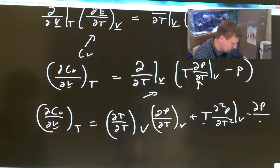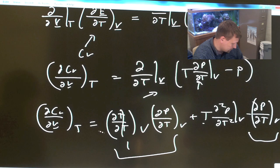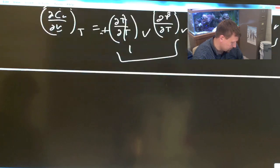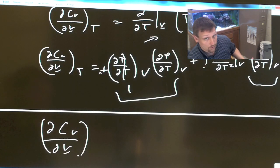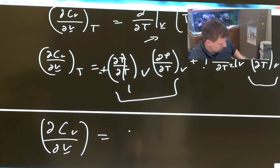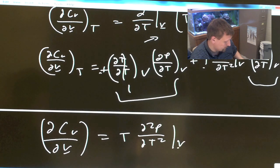This derivative is equal to one, so this term here and this term here, plus minus, cancel out, and you're left with our solution. Del CV del V underbar equals T del squared P del T squared constant V.